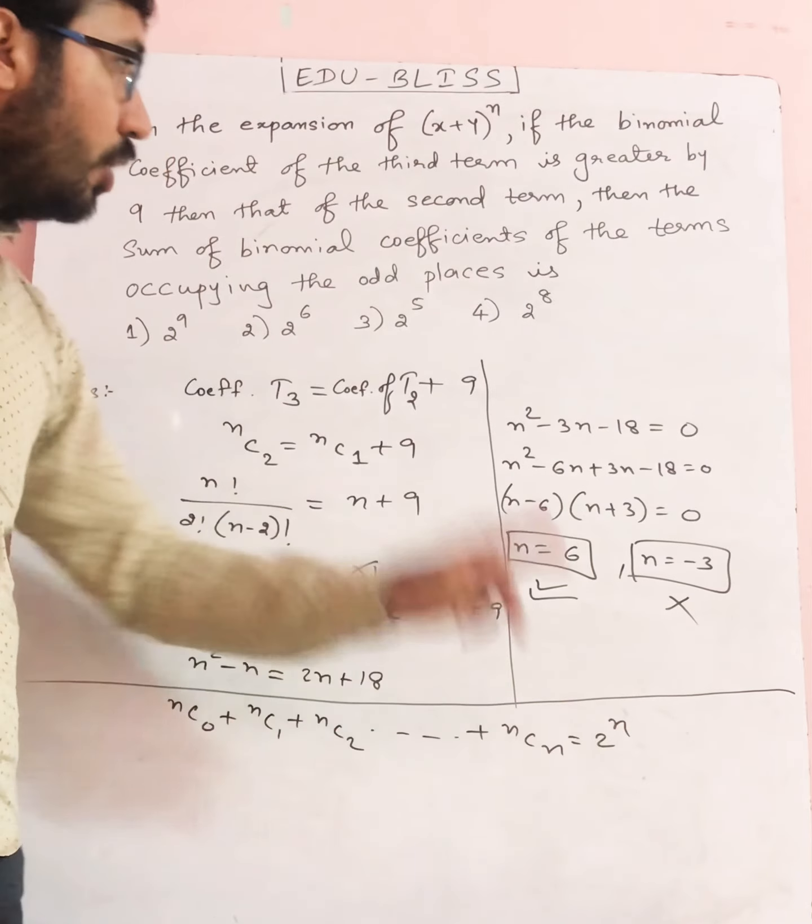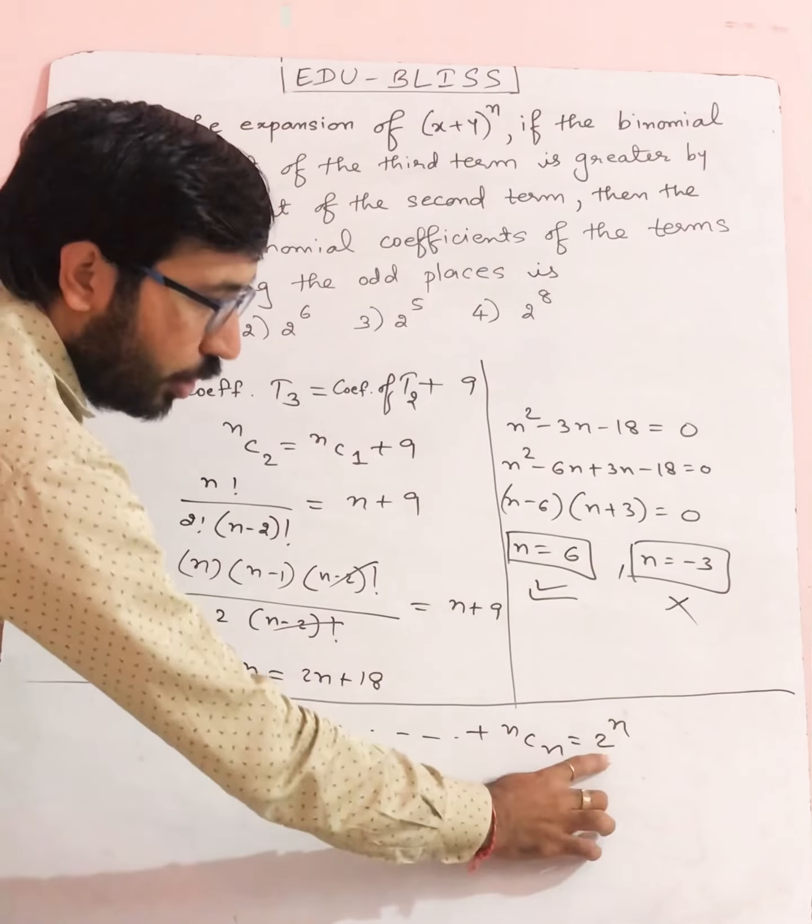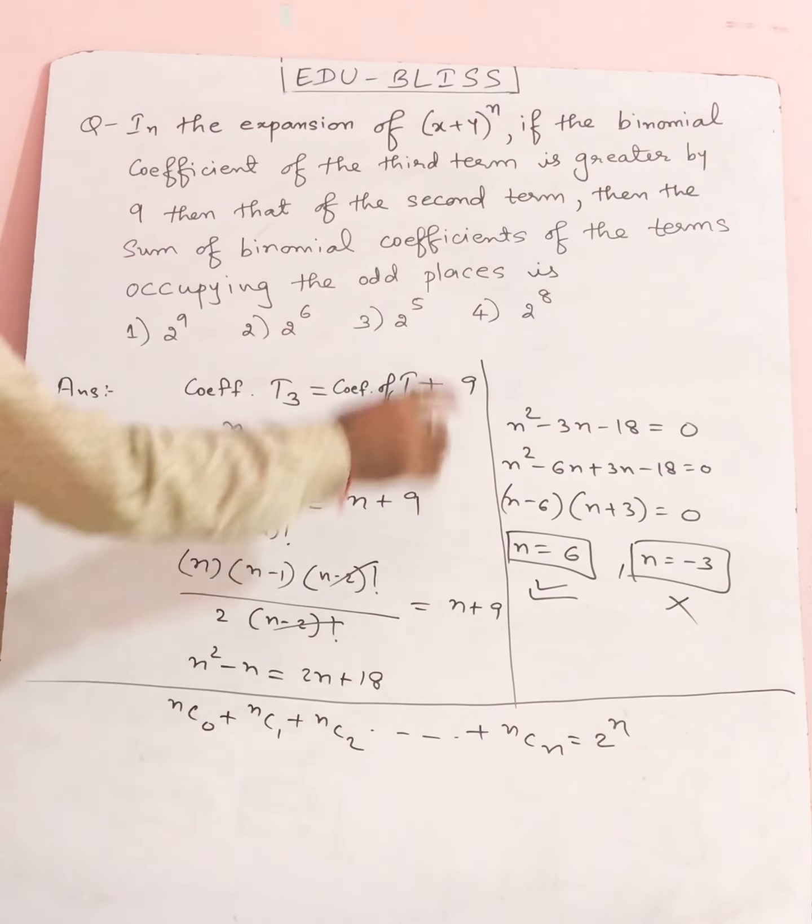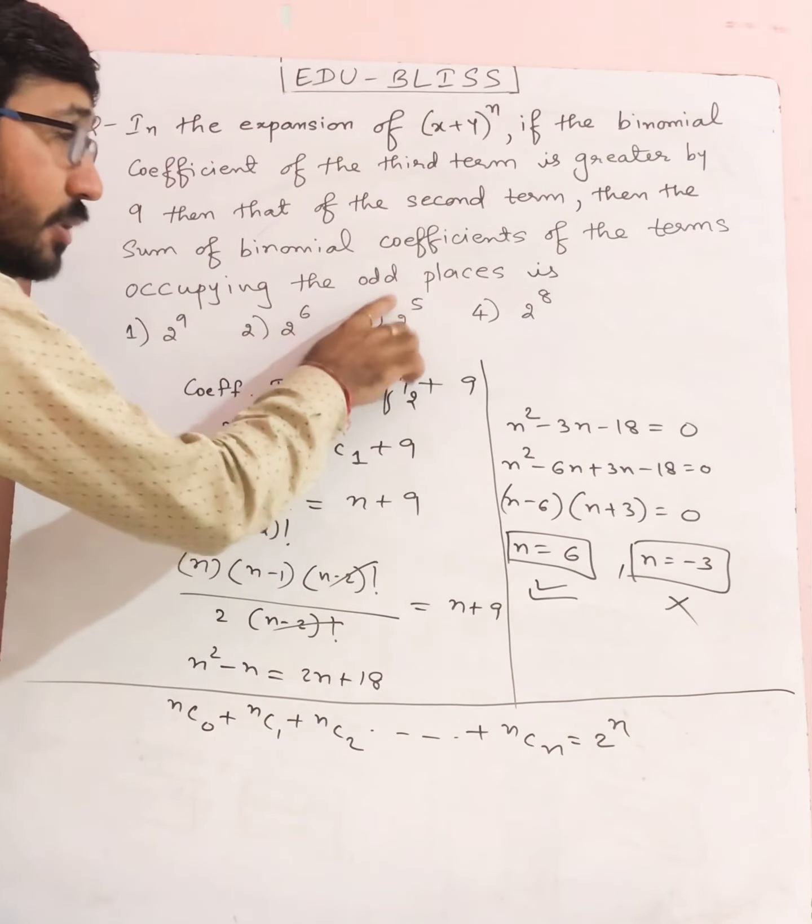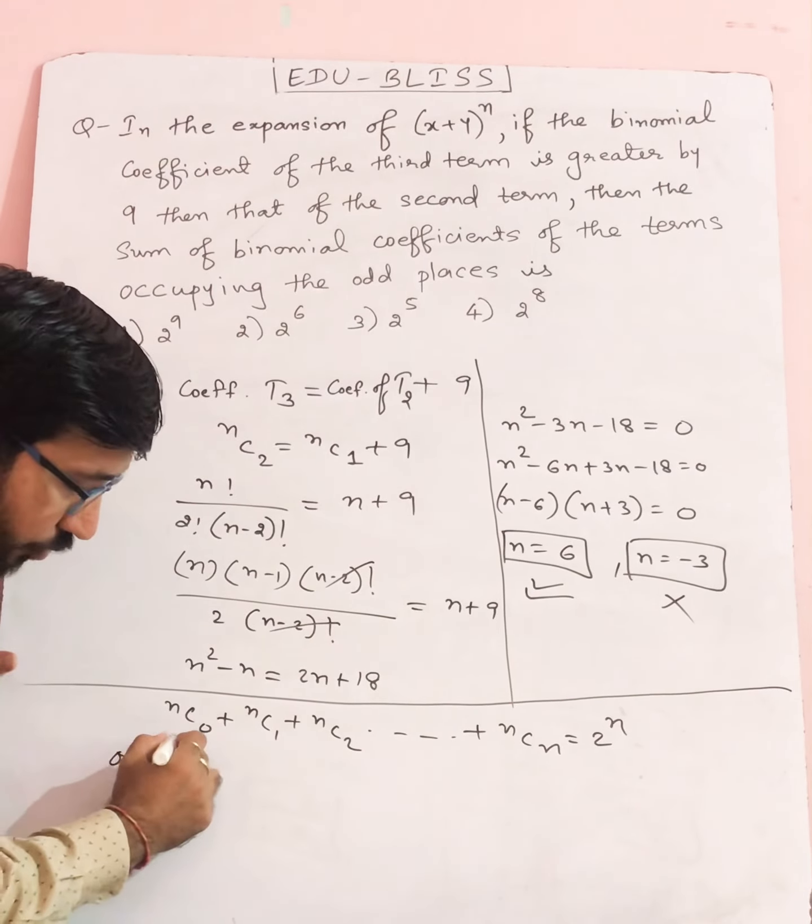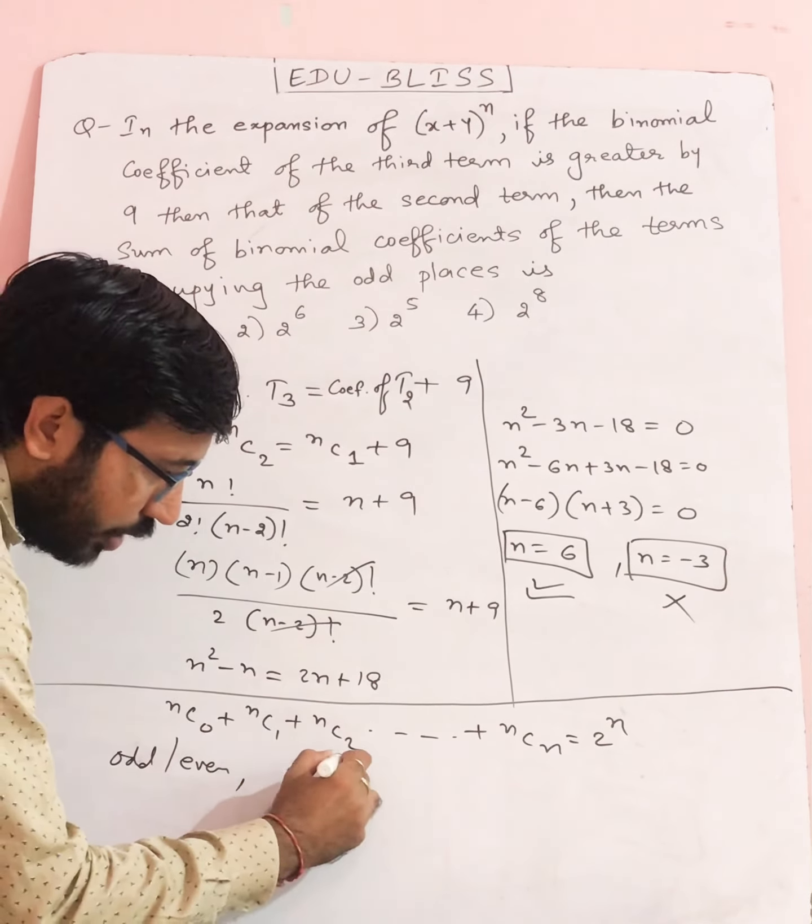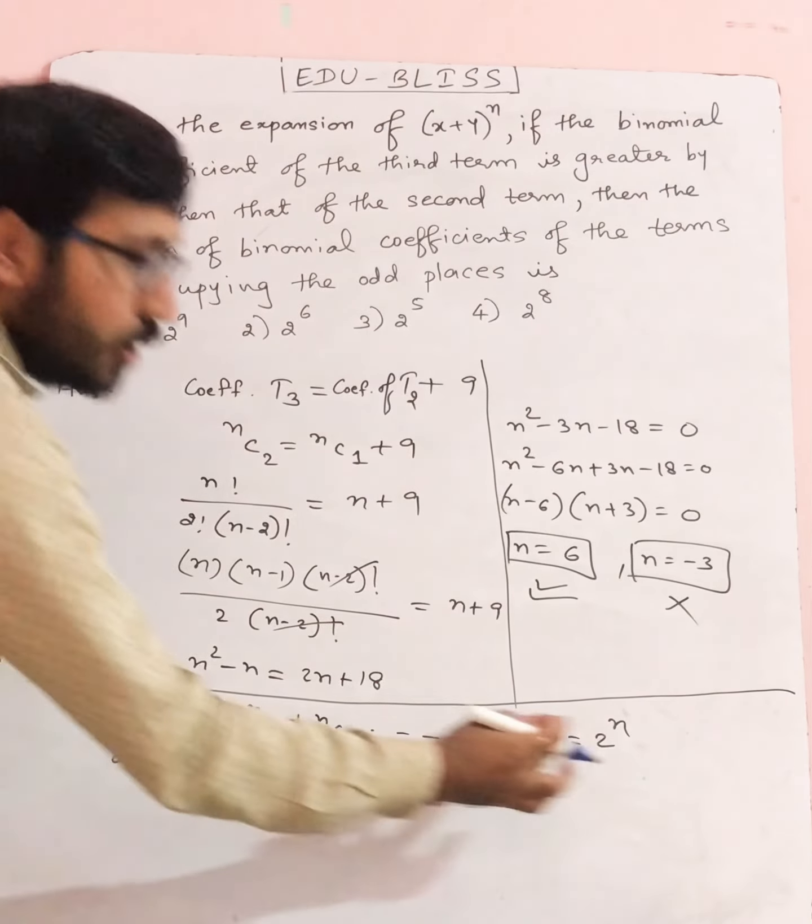So if asked for all coefficients, the answer should be 2^6. But here we're asked for the odd places, which means half of that. Obviously for odd or even, both give half, right? The formula is 2^(n-1), which is half of 2^n.